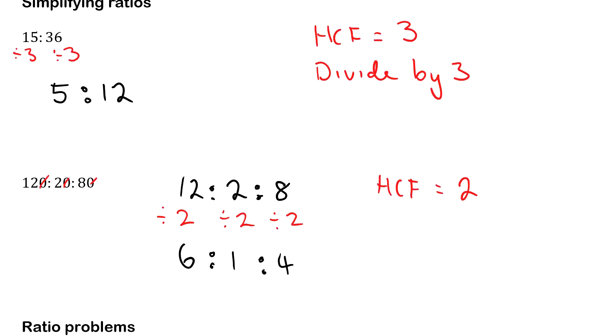So again, find the highest common factor. You then divide every term by that number, by the highest common factor, to get your simplified ratio.